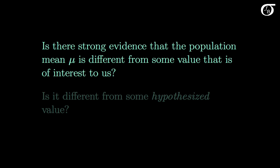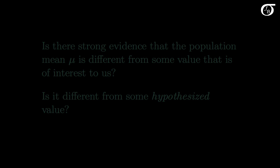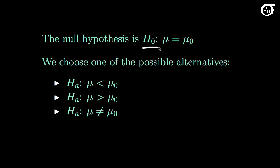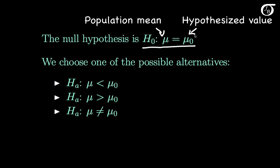The question is: is there strong evidence that the population mean mu is different from some value of interest — some hypothesized value? We're going to be testing the null hypothesis that the population mean mu is equal to a hypothesized value mu-naught. For example, we might test the null hypothesis that the population mean equals 10, in which case mu-naught is 10. We test that null hypothesis against one of three alternatives: mu less than mu-naught, mu greater than mu-naught, or mu different from mu-naught.